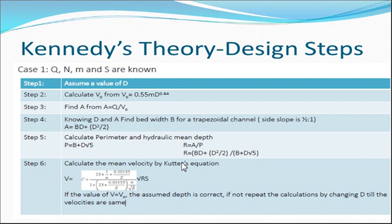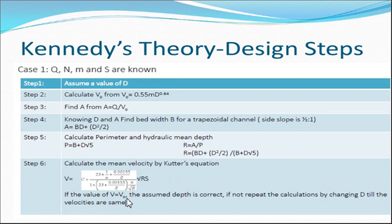Step six (the last step): calculate the mean velocity using Chezy's (Kutter's) equation: V = C × √(R×S), where C = [23 + 1/n + 0.0015/S] / [1 + (23 + 0.0015/S) × n/√R]. Using the values of S, R, and the given n, calculate V. If V equals V₀ (the critical velocity calculated earlier), the assumed depth is correct. If not, repeat the calculations by changing the depth value until the velocities are equal.